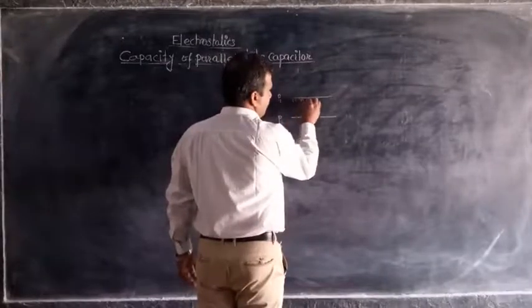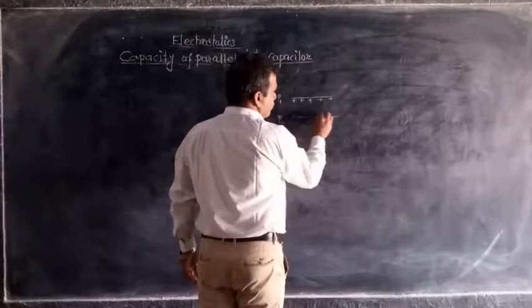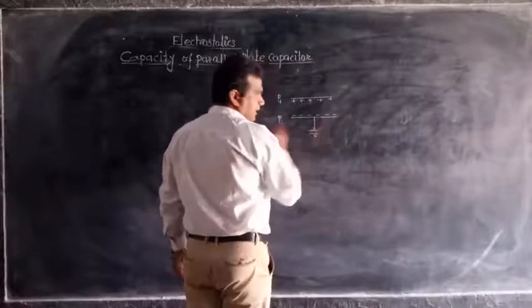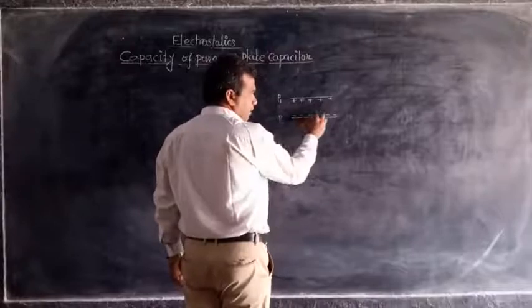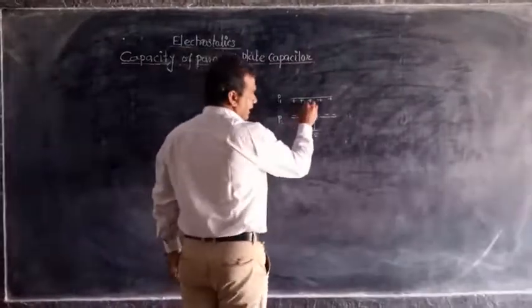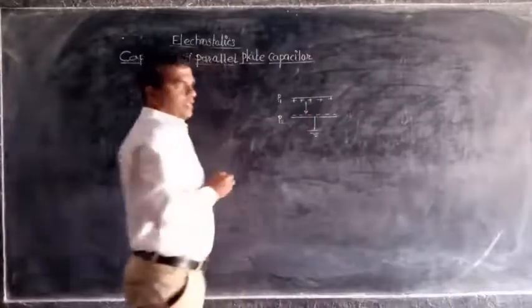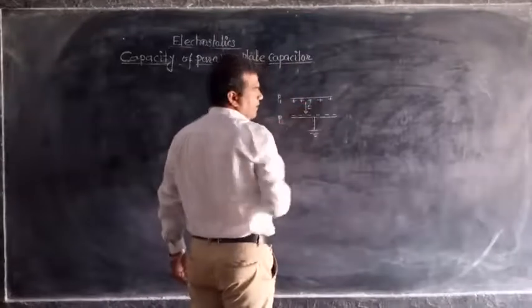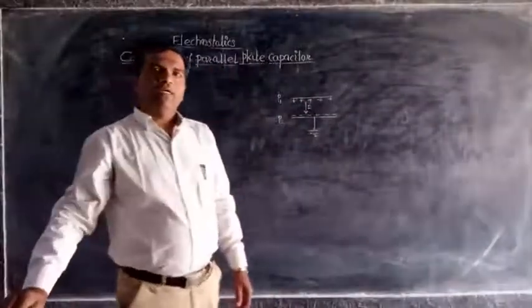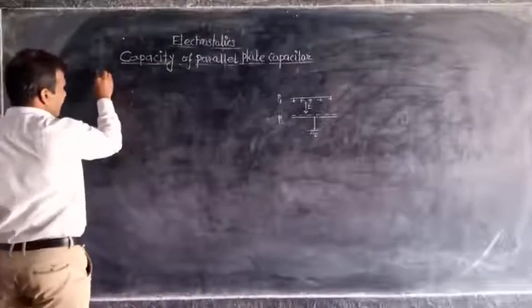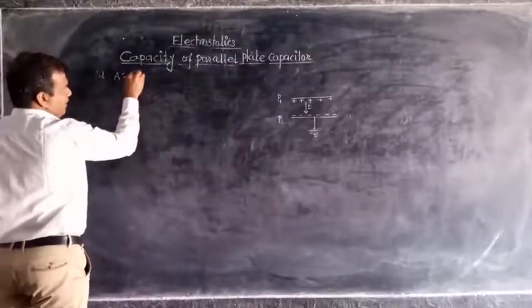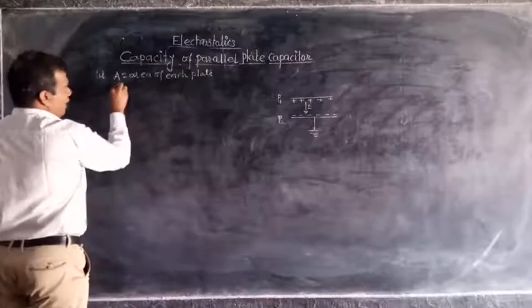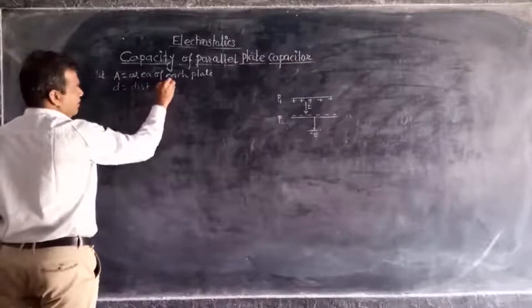Positive charges are given to plate P1 and negative charges are induced on plate P2. Plate P2 is connected to the earth. Therefore, the positive charges induced on plate P2 go to the earth. Let E be the electric intensity due to the positive charge, directed from positive to negative charge, meaning from P1 to P2. Let V be the potential difference between the two plates, A be the area of each plate, and d be the distance between the two plates.